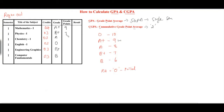From the grade points table: A+ is 9, B+ is 7, A is 8, O is 10, B+ is 7, and B is 6. Every mark sheet will have credits, the title of the subject, credits, grades, grade points, and the result. The student has not received RA, meaning she passed in semester 1. She registered for some credits and received all of them.